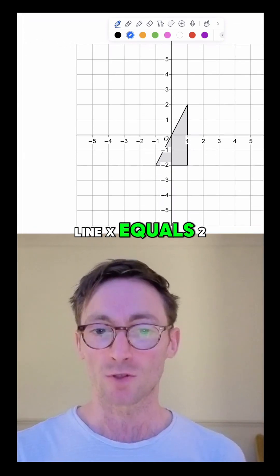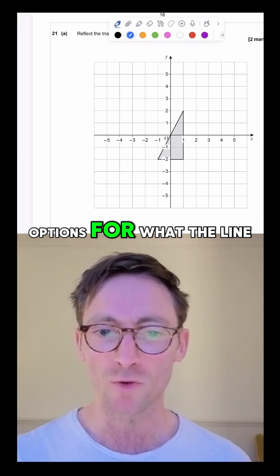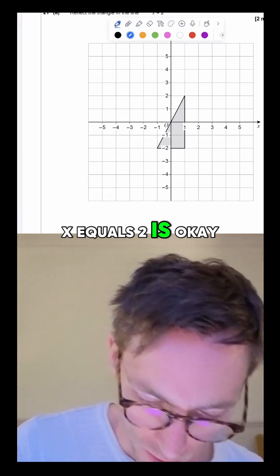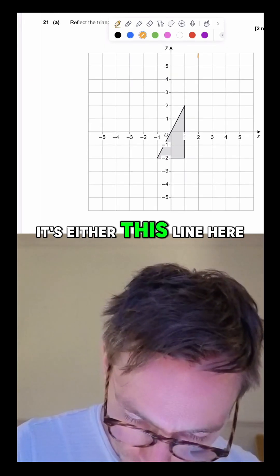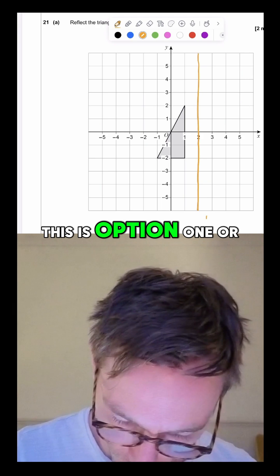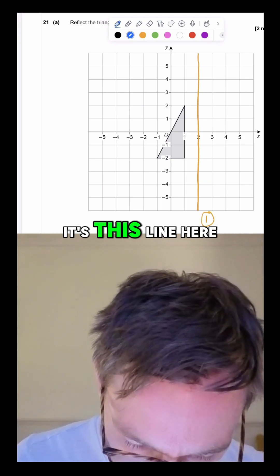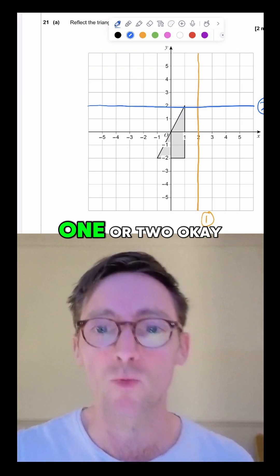Reflect the triangle in the line x equals 2. I'm going to give you two options for what the line x equals 2 is. It's either this line here, this is option one, or it's this line here, this is option two. What do you reckon, one or two?